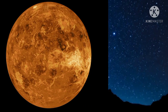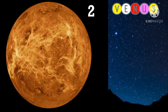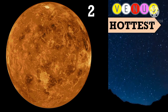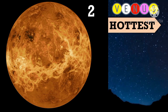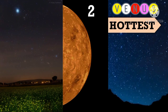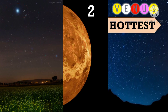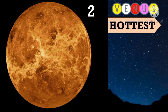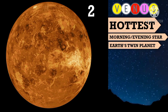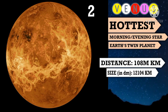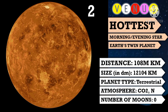Next is Venus. Venus is the second closest planet to the sun and the hottest planet. The thick layer of clouds in Venus' atmosphere reflects sunlight very well, making Venus the brightest object in the sky. It is often called the evening star or morning star. It is Earth's twin planet. Like Mercury, it is also a terrestrial planet with no moon and no rings around it.